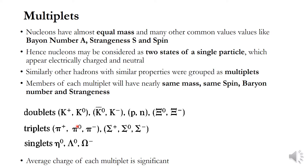For triplets, we have the Pion family: Pi-plus, Pi-zero, and Pi-minus — three members. Also the Sigma family: Sigma-plus, Sigma-zero, and Sigma-minus. There are also singlets — multiplets with only one member — for example, Eta-zero, Lambda-zero, and Omega-minus.